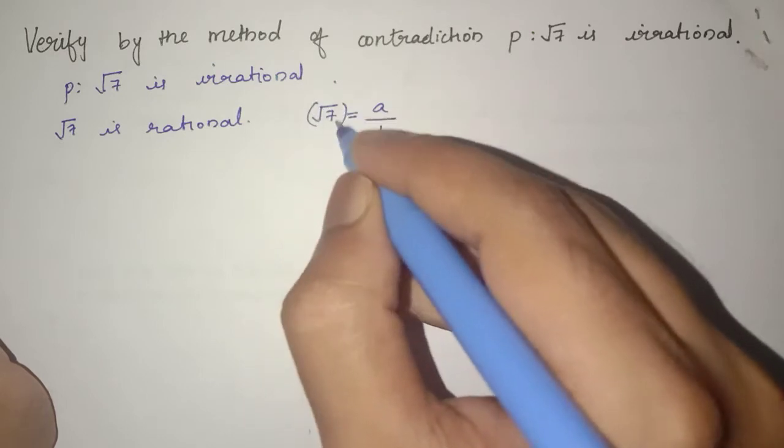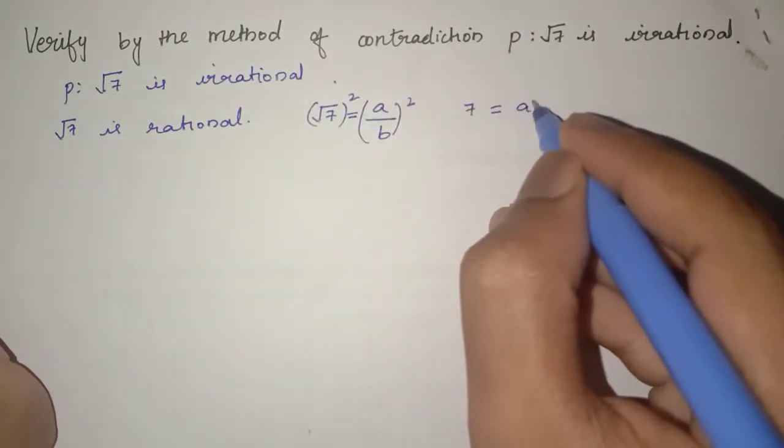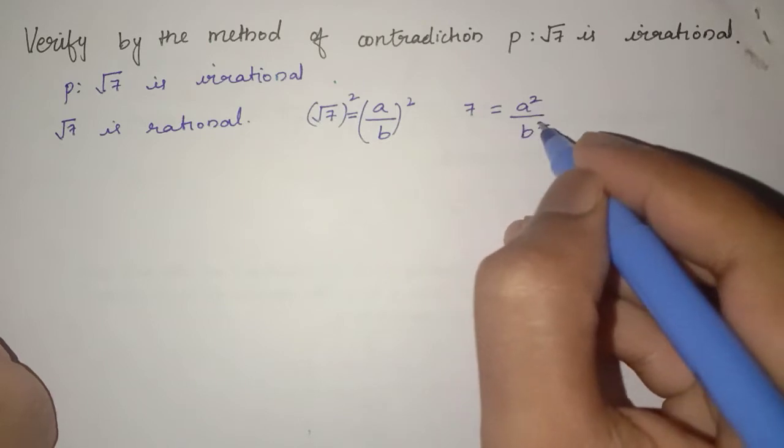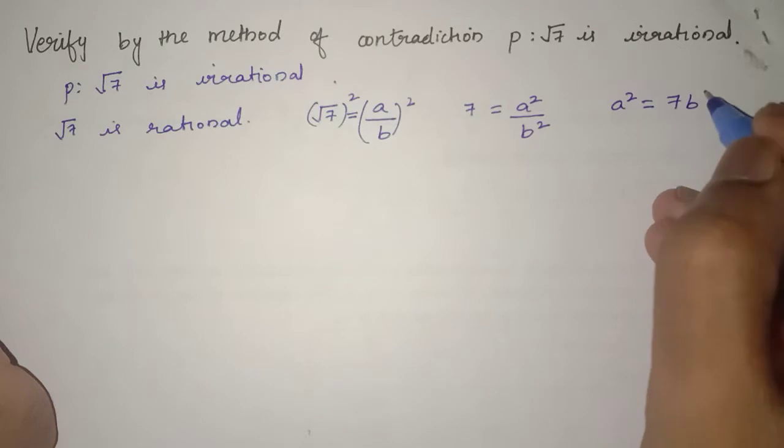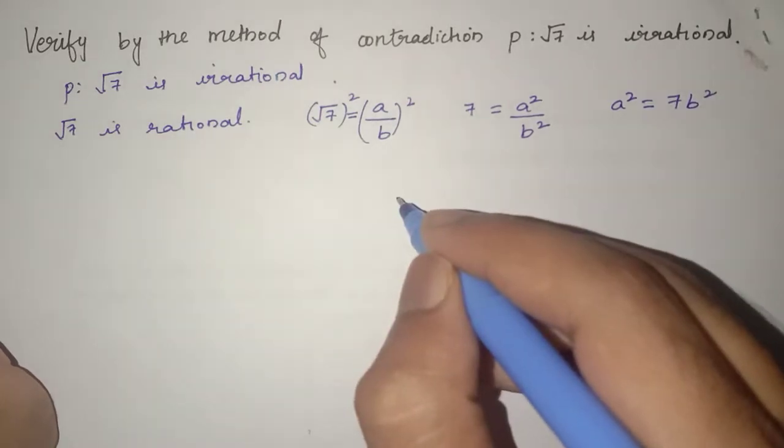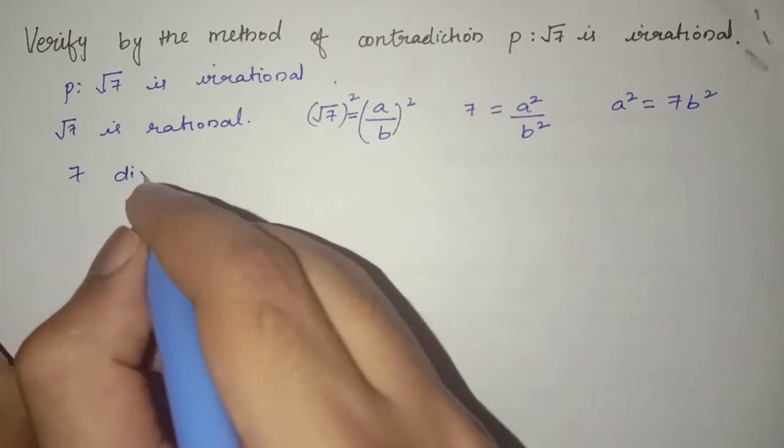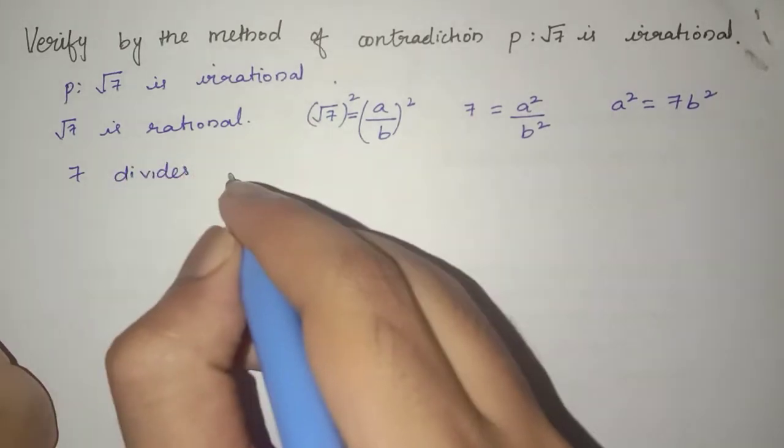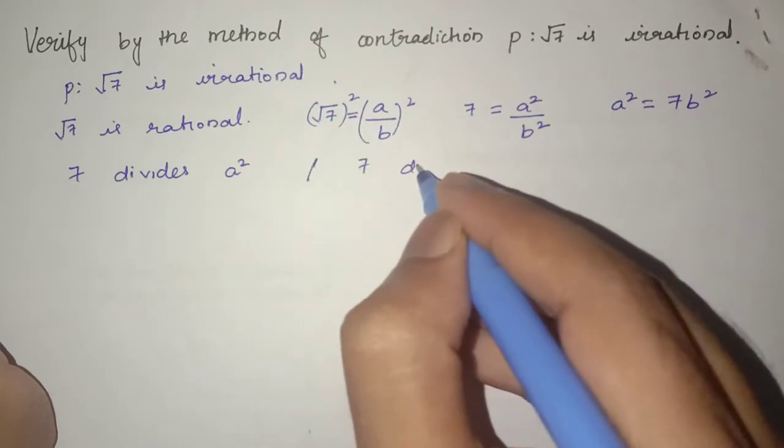If we square both sides, we get 7 = A²/B² or A² = 7B². From here we get that 7 divides A² or 7 divides A.